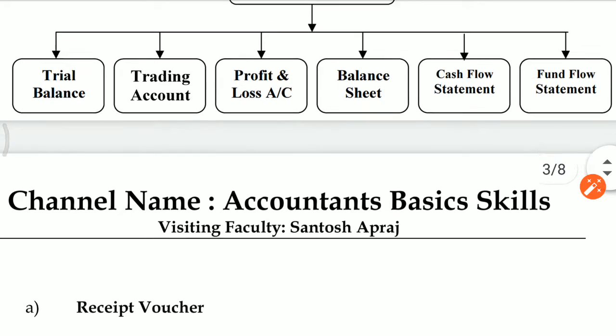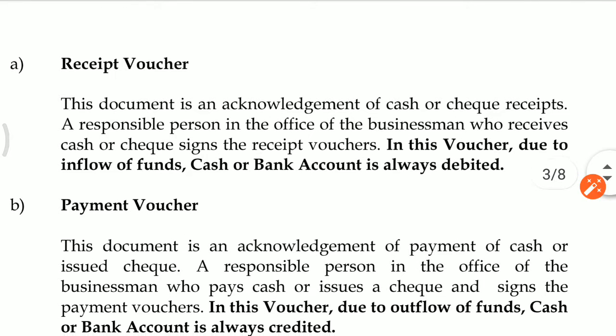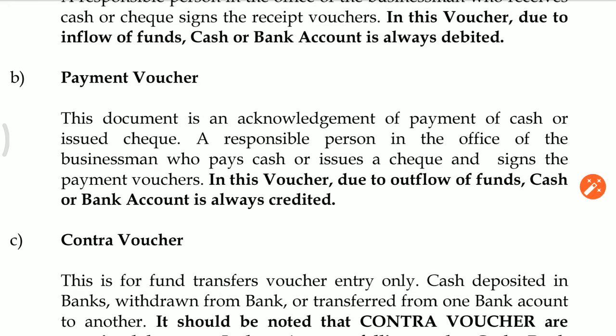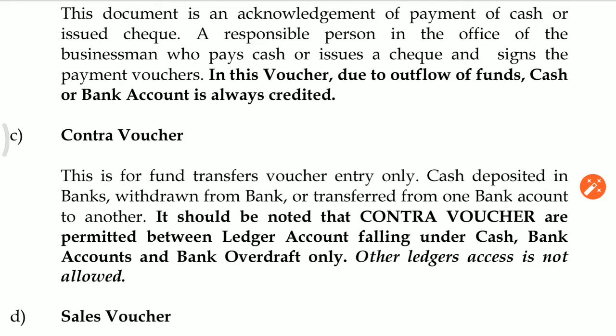I will now explain Receipt Voucher in detail. A Receipt Voucher is an acknowledgement of cash or check receipt. A responsible person who receives cash or check signs the receipt voucher. Due to inflow of funds, cash or bank account is always debited. In the case of Payment Voucher, this document is an acknowledgement of payment of cash or issue of check. Due to outflow of funds, cash or bank account is credited. For Contra Voucher, in the case of fund transfer from one bank to another bank, entry will be first bank account credit to second bank account. No other ledger access is allowed.